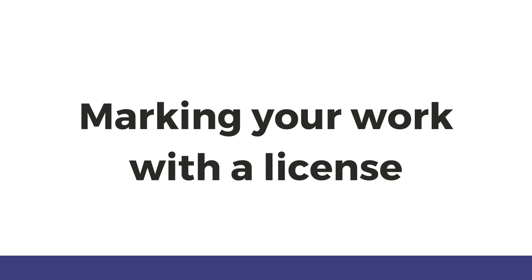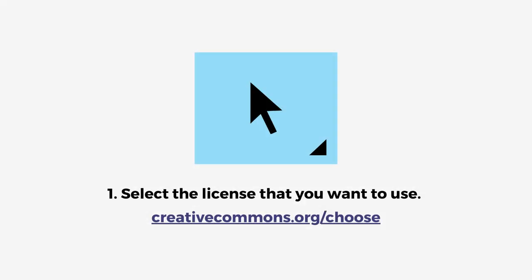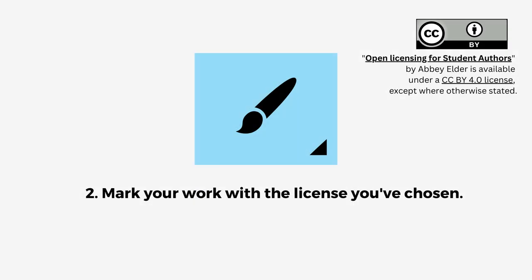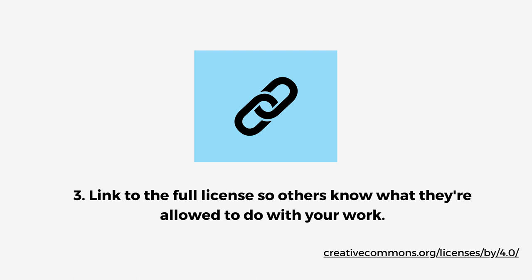So how do you add a CC license to your work? First, you choose the license you want to use. If you're not sure, you can meet with a librarian to talk through your options or use the Creative Commons Choose a License tool to walk through your options in more detail. Next, you need to mark your work with the license you've chosen. Usually this involves a short line of text or a bit of audio like this: "Open Licensing for Student Authors by Abby Elder is available to reuse under a Creative Commons Attribution 4.0 license." A link to the license terms is available in this video's description. Making sure to link to the full license is important so others know what they're allowed to do with your work. For text-based projects, you might put your license information in a footer or on a copyright page, and in a PowerPoint you could put your license on the title page or at the end with your references.